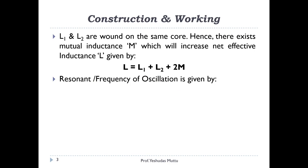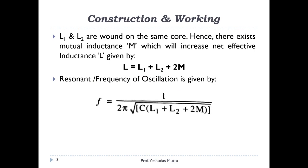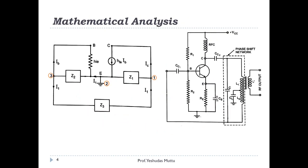The resonant frequency of oscillation is given by the formula: f = 1 / (2π√(LC)), where L is the total inductance. This is something we are going to derive now in the mathematical analysis.